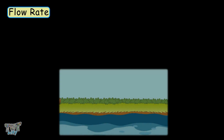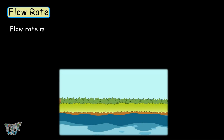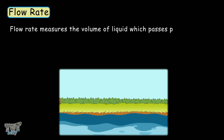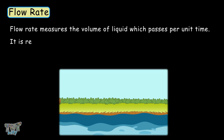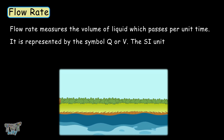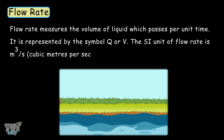Now here comes the term flow rate. What is it? Flow rate measures the volume of liquid which passes per unit of time, and it is represented by the symbol Q or V. The SI unit of flow rate is cubic meters per second.